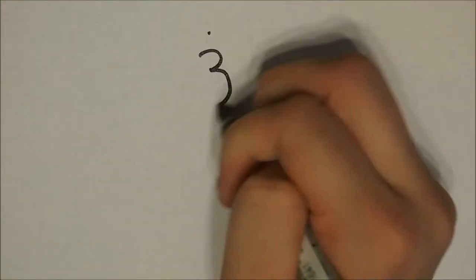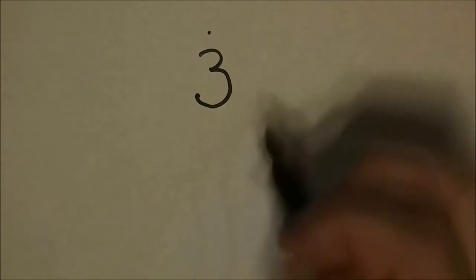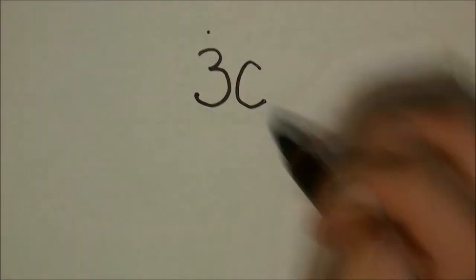My first step is to write down the expression. Bobby is buying three CDs so I put down the coefficient or the number three. Then I put down the variable, the letter. I'm going to choose C for CDs.